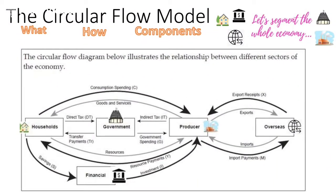Let's summarise the circular flow model. There are five different sectors, and what you'll need to know is the role of each of those sectors. We have households over on the left, the government in the middle, producers on the right, and then we have the financial market down below. These are all internal — the sectors that are in New Zealand. Then we have the overseas market, which we can see there on the right.